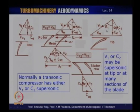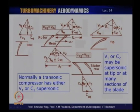At the tip, the value of V1 is the highest compared to the mean and the root, where it is lowest. As a result, at the root V1 could be subsonic, at the mean it could be near sonic, and at the tip it could be clearly supersonic. So the flow would transit from subsonic to supersonic as it goes from root to tip of the blade.